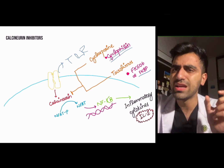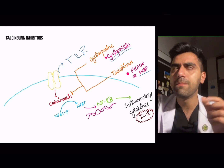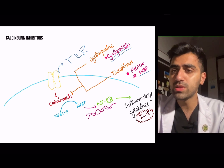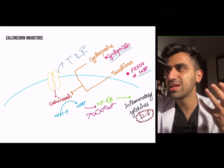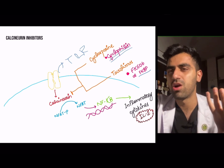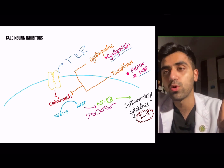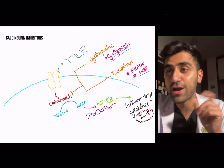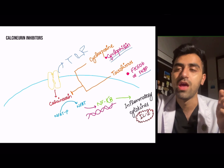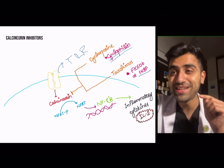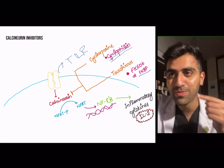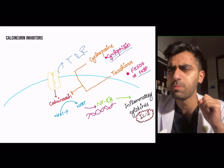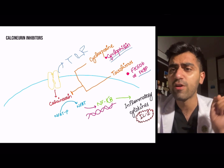To remember: cyclosporine binds cyclophilin — 'philly' means loving, so 'cyclo-loving thing' binds cyclosporine. For tacrolimus, it sounds like a brainy drug, so remember it binds FKBP or FK506 — only the 'smart people' remember that complicated name. Tacrolimus binds FK binding protein.